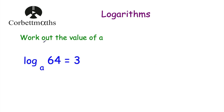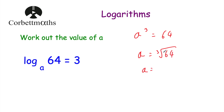Question 2: work out the value of a. We have log to base a of 64 is equal to 3. So a cubed equals 64. To find the missing base we take the cube root of 64: the cube root of 64 is 4 because 4 times 4 is 16, times 4 is 64. So a equals 4. Log to base 4 of 64 equals 3 — let's check: 4 cubed is 64. Correct, so a is 4.